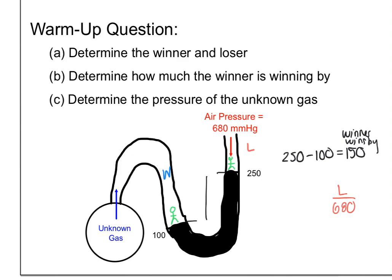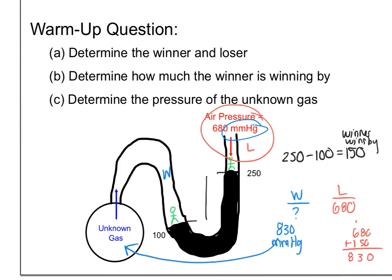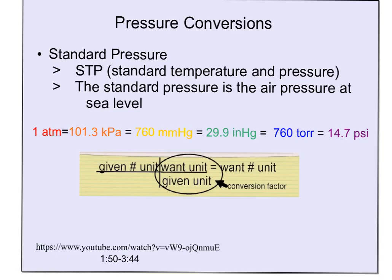Right now I know that my loser scored 680 points because the loser is this side right here. It has 680. My winner, we don't know, but we know that it won by 150. So my question mark, because it's the winner, has to be bigger than 680. And by how much? It has to be bigger by 150 points. So we should get 680 plus 150 gives me 830. And we match the same unit, mmHg, millimeters of mercury. So in this case, my unknown gas was the winner. It ended higher than the air pressure. And I knew it was the winner because the black bar was pushed down farther by the unknown.